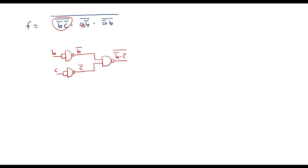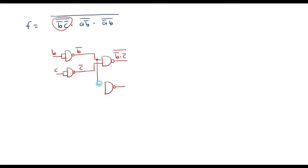Similarly, let me implement (ab̄)̄. a is a direct input, and b̄ is already available. I will take one more NAND gate. The input is b̄ connected here, and the other input is a. The output is (a · b̄)̄. So now we have implemented this term.